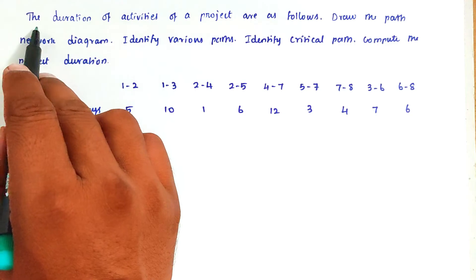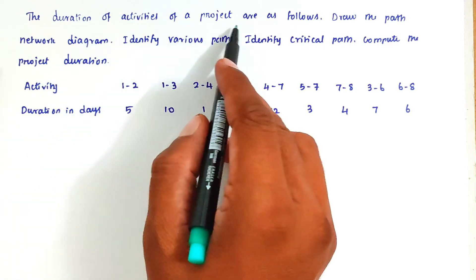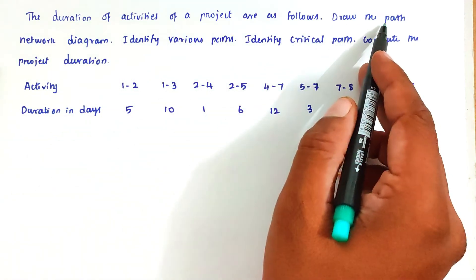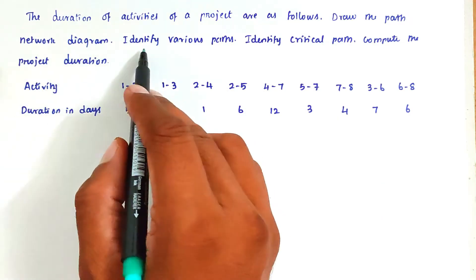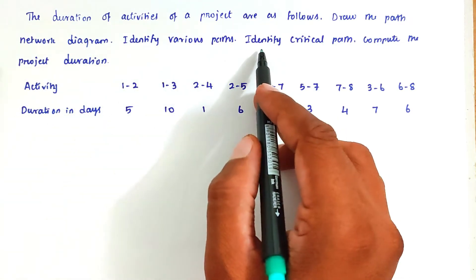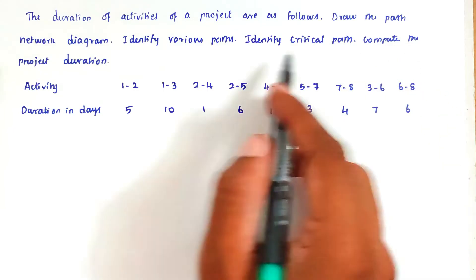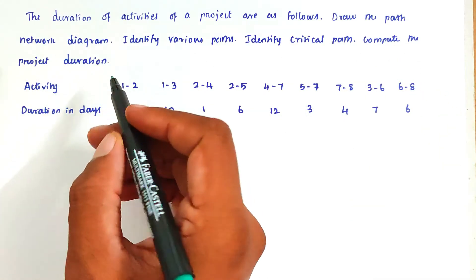So the problem is, the duration of the activity of the project are as follows: draw the path network diagram, identify the various paths, then identify the critical path, compute the project duration.